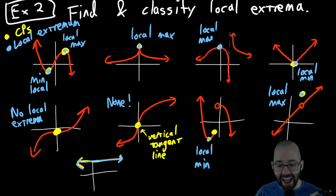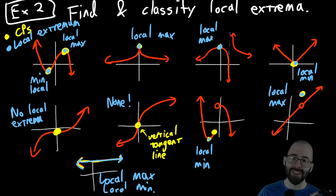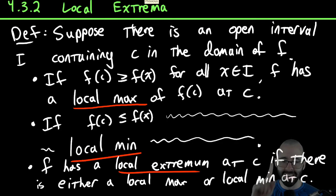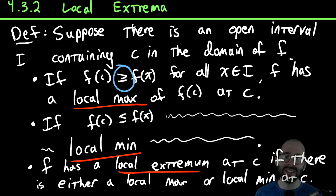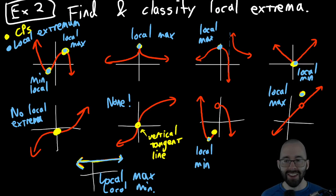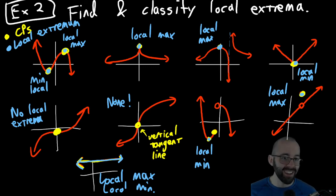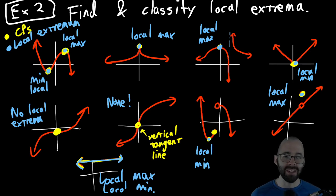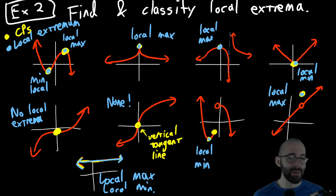Everything is a local max and everything is a local min here — this is the super weird one. The definition says greater than or equal to, so it doesn't have to actually be the biggest, it just has to be at least as big. Every point on this horizontal line is at least as big as the neighboring points, and at least as small as the neighboring points. So everything on this horizontal line is a critical point, a local minimum, and a local maximum.